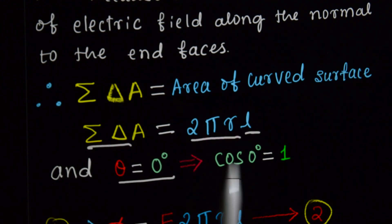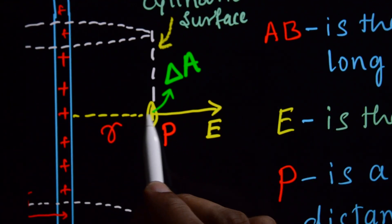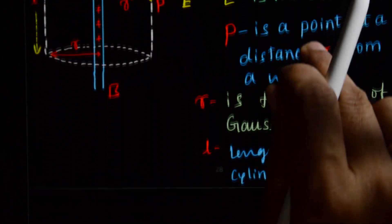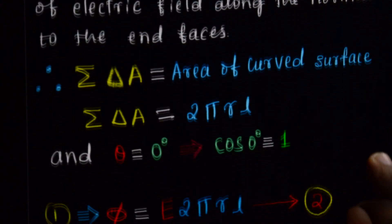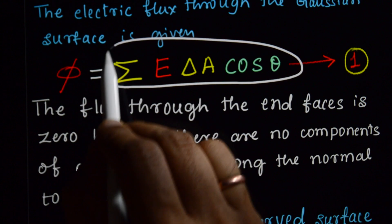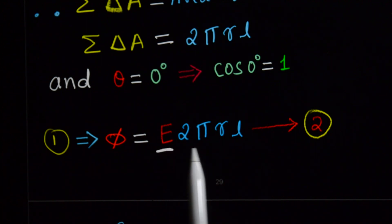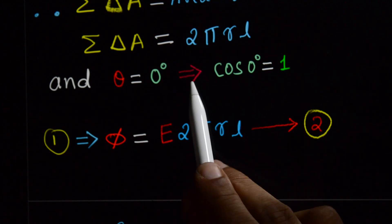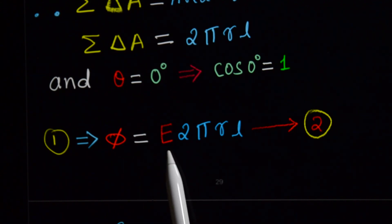Since theta is zero, cos(0) = 1. Therefore equation 1 becomes: flux = E × 2πRL. This is our first equation — flux equals E into 2πRL.